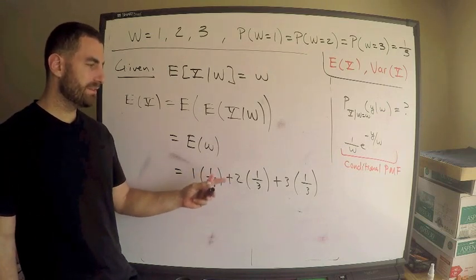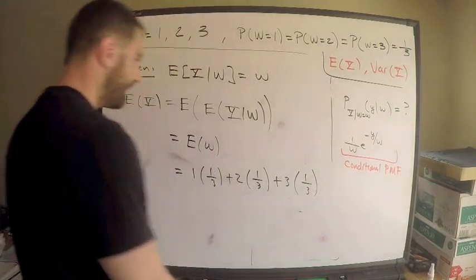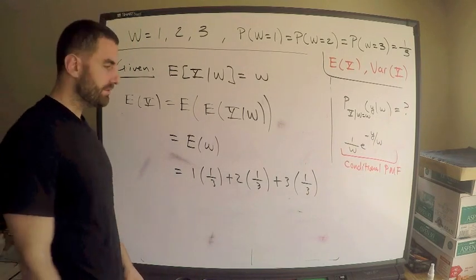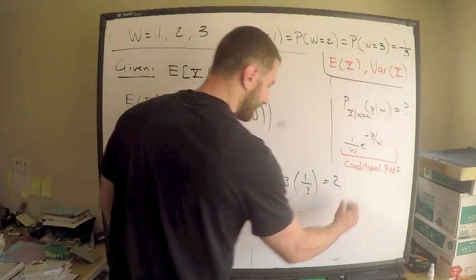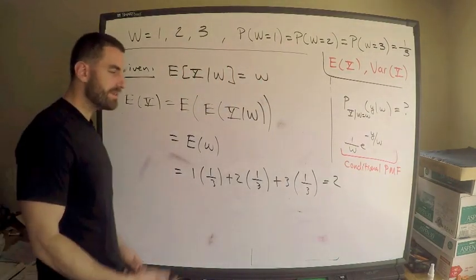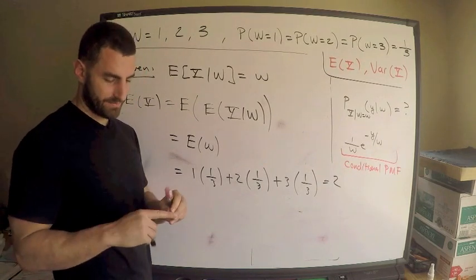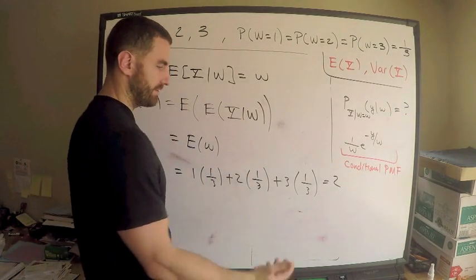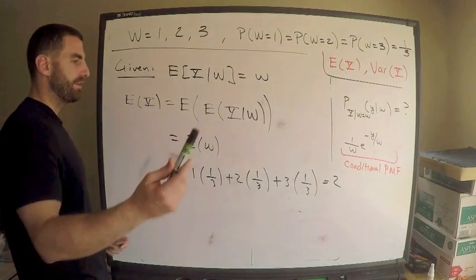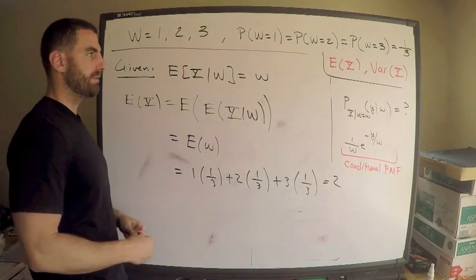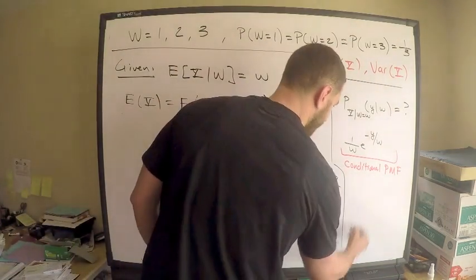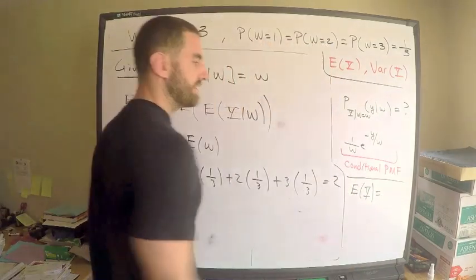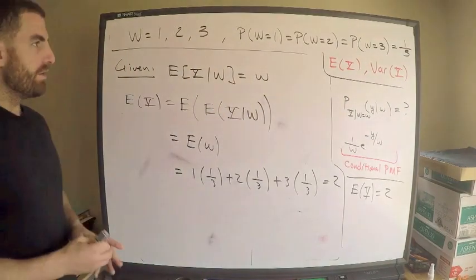So E[W] is one times one-third, plus two times one-third, plus three times one-third — which is one-third plus two-thirds plus three-thirds. That's (1 + 2 + 3) over 3, which is 6 over 3, equals 2. So the unconditional expectation of Y is 2. Done.